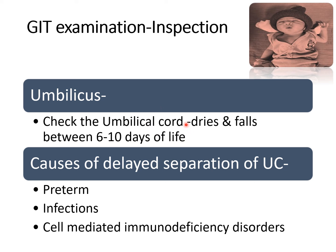Normally the umbilical cord dries and falls between 6 to 10 days of life. Sometimes delayed separation of the umbilical cord occurs in preterm babies and even in those delivered by caesarean section — delayed separation can occur even in a healthy baby. But whenever there is delayed separation and the baby has any signs or symptoms of infection, we should rule out sepsis, which leads to delayed separation of umbilical cord. Also, in cell-mediated immunodeficiency disorder, the baby will have delayed separation of the umbilical cord.